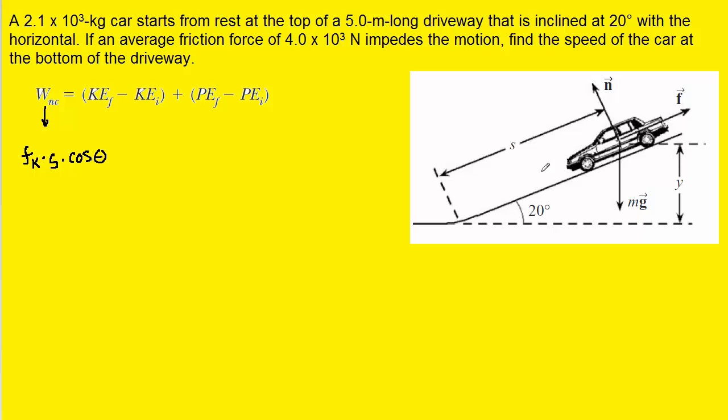And to do that, we can come over to the diagram. We notice that the car is moving down the ramp, and so its displacement would be pointing in this direction. We also notice that the frictional force is pointing up the ramp in the opposite direction. And so we have the displacement pointing in this manner, and then the frictional force pointing in the opposite direction. Notice that the angle between those two vectors would be 180 degrees.